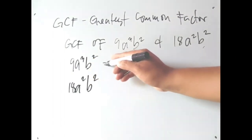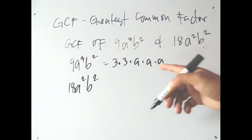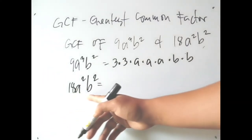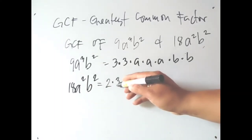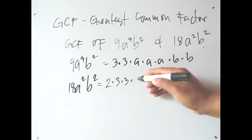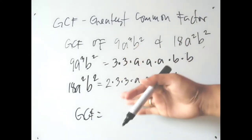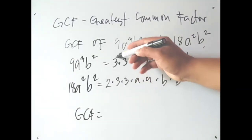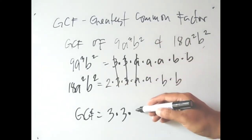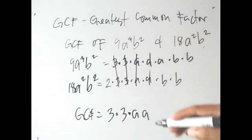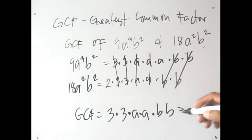Find the GCF of 9a³b² and 18a²b². Get the prime factors: 9 is 3 times 3; a³ is a times a times a; b² is b times b. For 18: 18 is 2 times 9, and 9 is 3 times 3, so the prime factors of 18 are 2 times 3 times 3. Then a² is a times a; b² is b times b. Now combine the common factors.